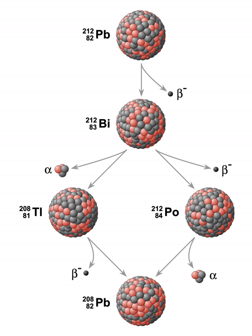For elements above lead in atomic number, the decay chain typically ends with an isotope of lead or bismuth. Bismuth itself decays to thallium, but the decay is so slow as to be practically negligible.